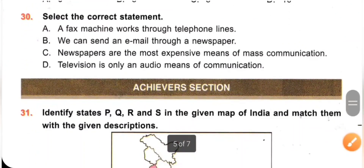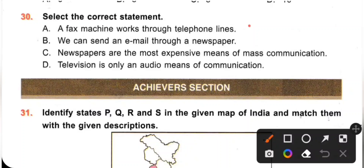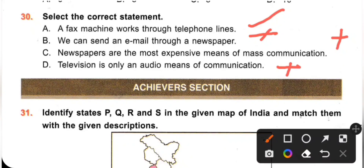Question 30: Select the correct statement. A. A fax machine works through telephone line — this is the correct statement. B. We can send an email through newspaper — incorrect; we can send an email through the internet. C. Newspapers are the most expensive means of mass communication — incorrect; newspapers are the cheapest means of mass communication. D. Television is only an audio means of communication — incorrect; television is an audio and visual means of communication. Option A is the correct answer.